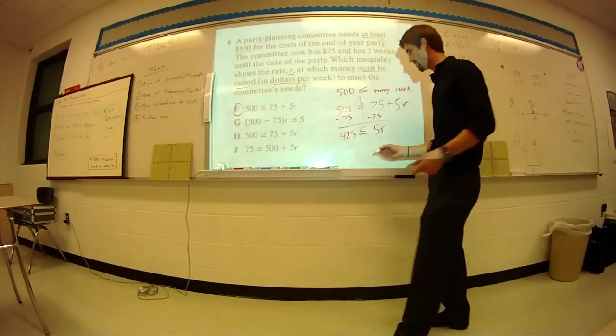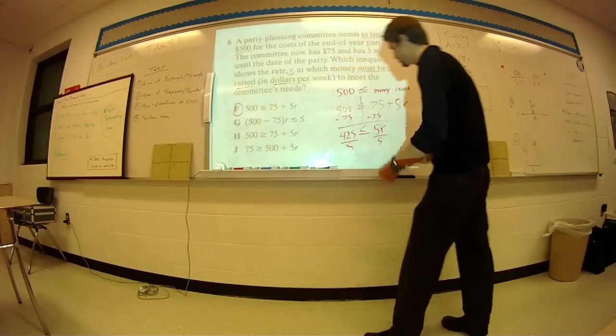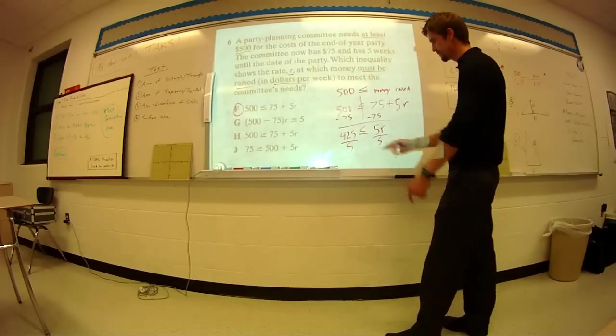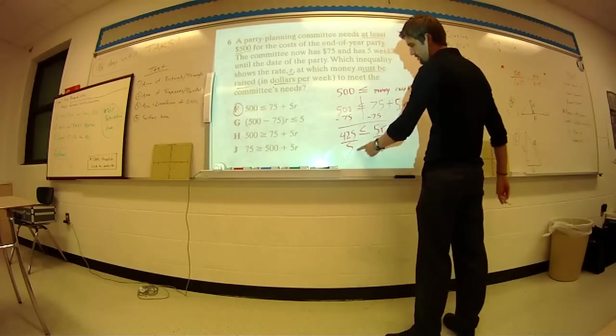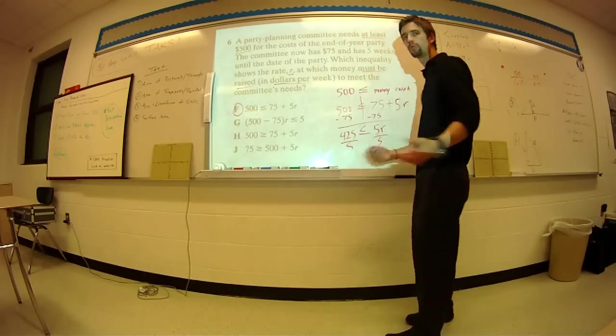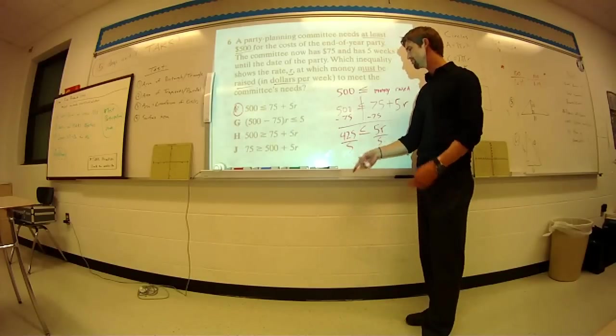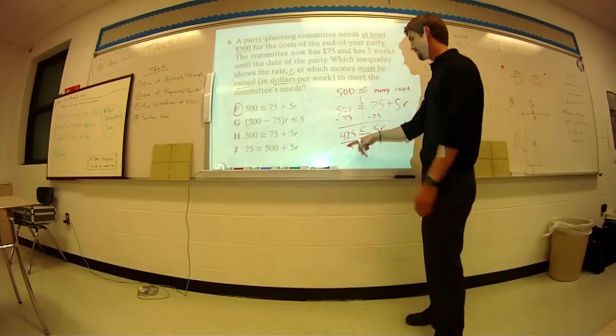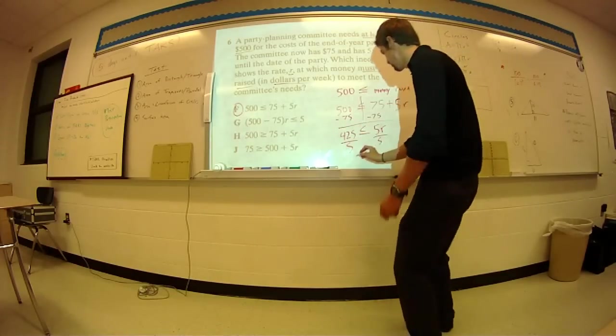Now you just divide by five. And you could do that with the calculator if you want. I don't have to do that with the calculator because I know five goes into $100 20 times. You've got $400, so $20 times 4 is $80. And then five goes into $25 five times. So therefore, $85 is less than or equal to R.